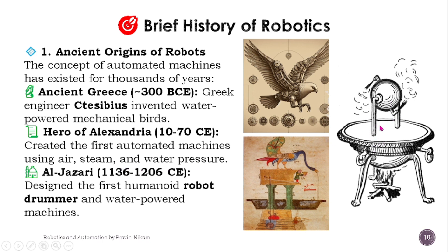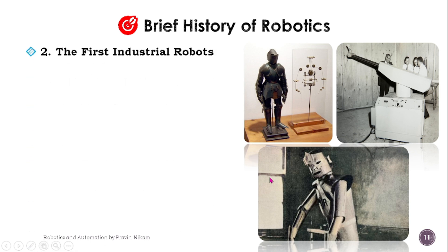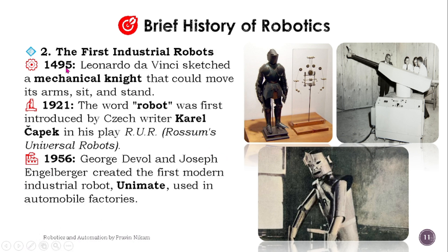Al-Jazari designed the first humanoid robot — a drummer — and water-powered machines. In 1495, Leonardo da Vinci sketched a mechanical knight that could move its arms, sit, and stand. The word 'robot' was first introduced by Czech writer Karel Čapek in his play R.U.R., i.e., Rossum's Universal Robots.